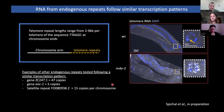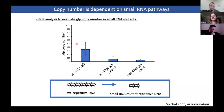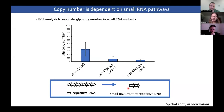We then wondered what these small RNAs are for and why they need to process these repetitive sequences. We were wondering if maybe they could change copy number for these repeats. So we evaluated GFP copy number for the transgene in wild-type background and in the small RNA mutants, and found that the copy number was significantly reduced in the small RNA mutants, indicating that small RNAs were necessary to maintain copy number for this repetitive DNA.